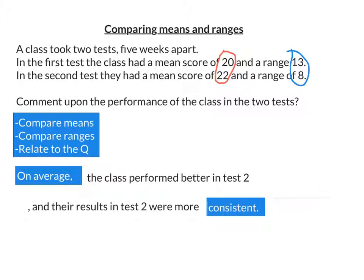And their results in test two were more consistent as the range was lower. So my statement would be, on average, the class performed better in test two, and the results in test two were more consistent.